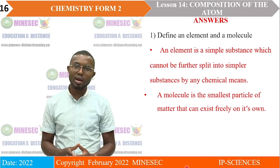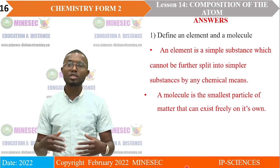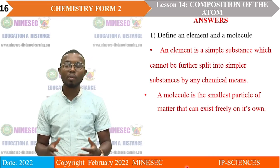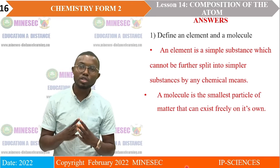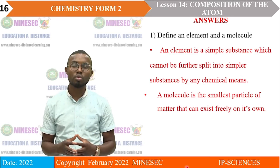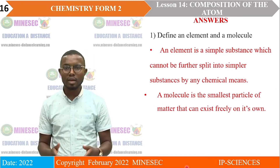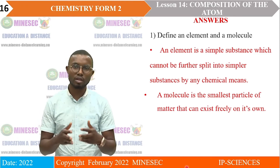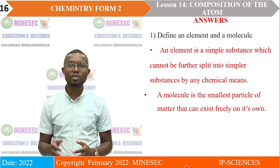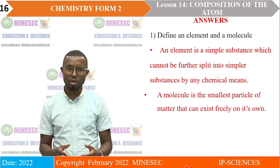Referring now to a molecule of a compound, for example carbon dioxide, we have a molecule of a compound which is formed from the combination of two or more atoms. In the case of carbon dioxide, we have carbon and oxygen which are chemically combined together.